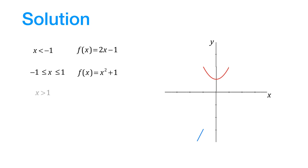Finally, when x is greater than 1, the function is given by x plus 1, which is a straight line again of slope equal to 1 and y-intercept equal to 1. So we can sketch it like this.